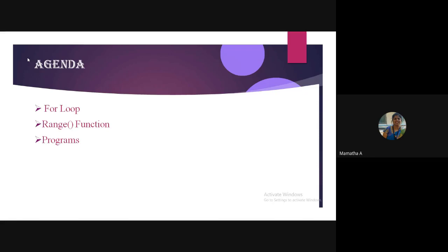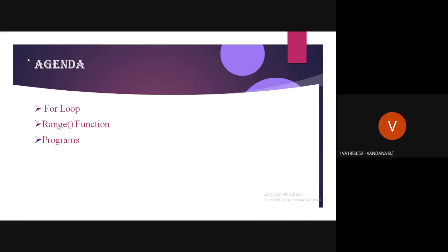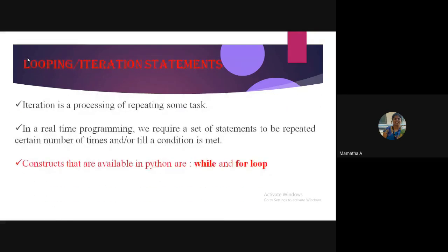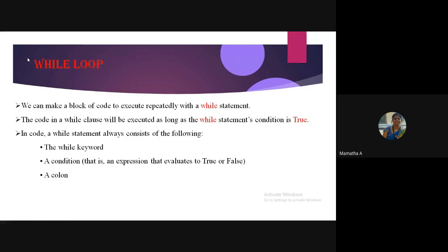Can anybody give me the syntax of the while loop? While condition, then clause. The syntax has the keyword 'while' followed by the condition. You should say it is an expression that evaluates to true or false, then the colon, then on the next line an indented block of code which we call the while clause.